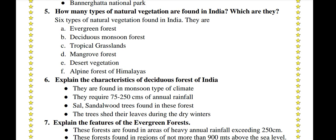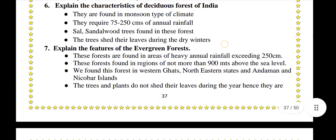Explain the characteristics of the deciduous forests of India. They are found in a monsoon type of climate and require 75–250 cm of annual rainfall. Sal and sandalwood trees are found in these forests. The trees shed their leaves during dry winters.